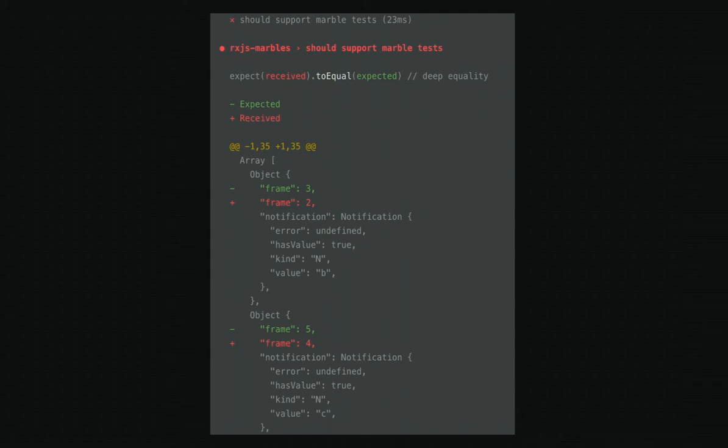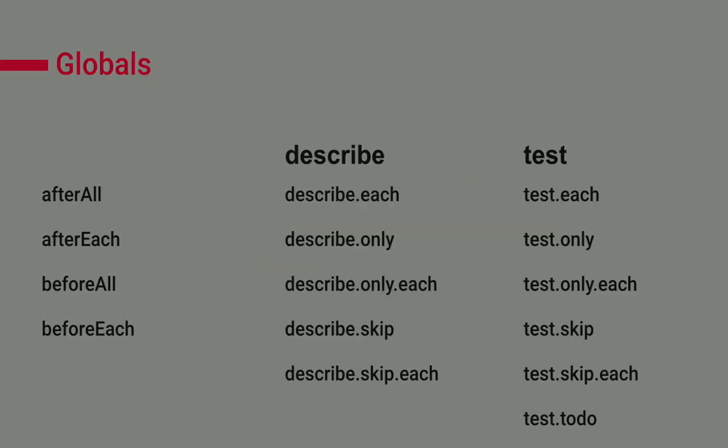So this were two examples where we can use snapshots, but Jest offers also some globals. In Jasmine, we know also globals like describe and it and some others. So they are like pretty familiar. And Jest we have the after all after each before all before each, it's the same as in Jasmine. But then we have also describe. And the special thing on describe, we have a describe each, a describe only, only each, skip each. Okay, that's special because I never saw this in Jasmine. On the other hand, we have also the test commands. And the test, it's similar to it. If you don't want to use a test because you are familiar with it, it's perfectly normal.